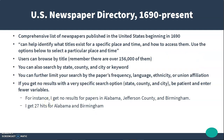Let's talk about the U.S. Newspaper Directory, which covers 1690 to the present. It is a comprehensive list of American newspapers published from 1690 to present day, and it can help you identify what titles exist for a specific place and time and how to access them. You can browse by title — but remember there are over 156,000 of them, so that's a very long list. You can also search by state, county, and city, or keyword.